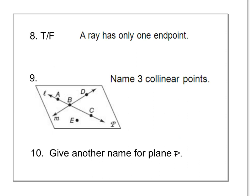Please pause the video. Try numbers 8, 9, and 10. A ray has only one end point. True or false? That's true. A ray looks like this. And so true. It only has one end point, and then it goes off in the other direction forever.